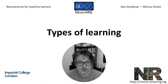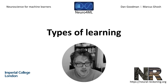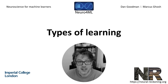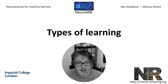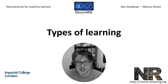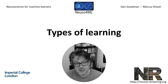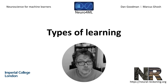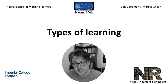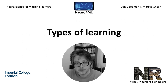This week's videos are about learning — how it happens in the brain, what models we have of that, and how those models relate to algorithms from machine learning. Before we get into the details, let's start with an overview of what types of learning there are and the different mechanisms they could use.